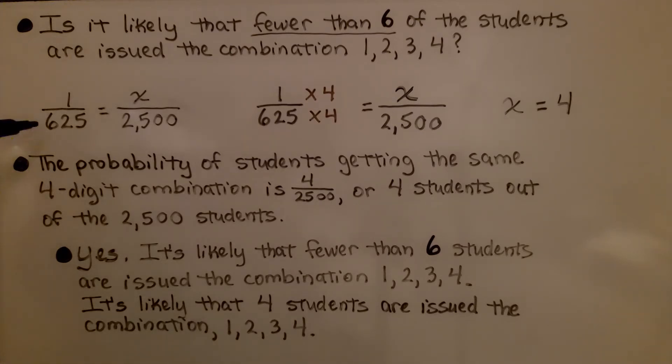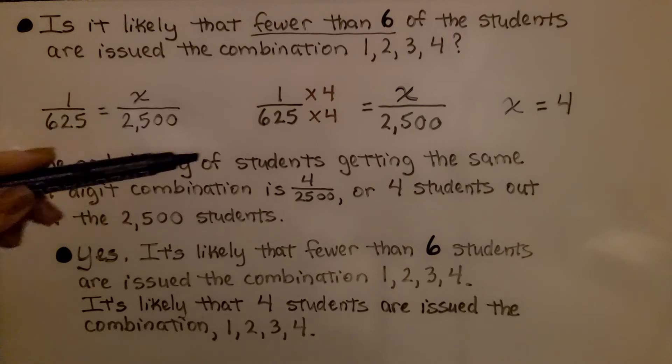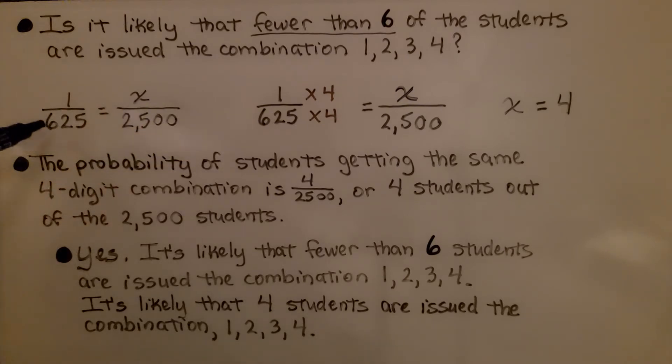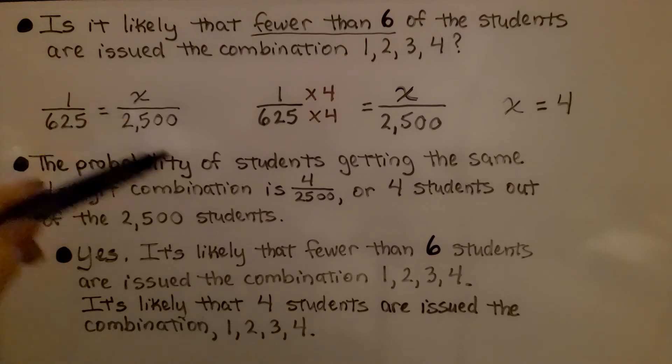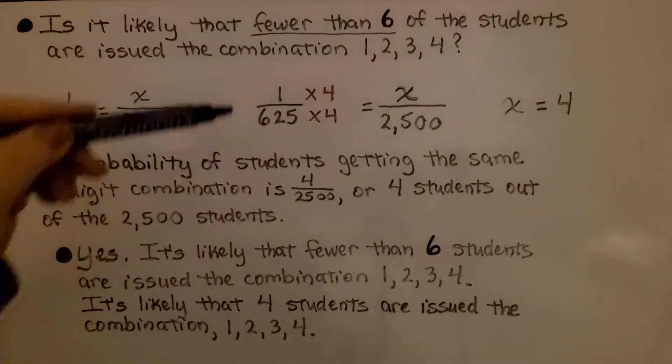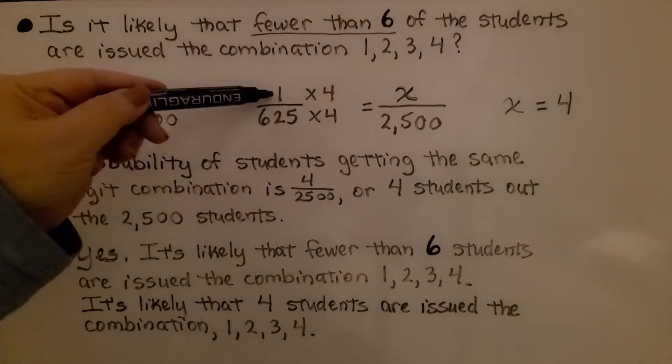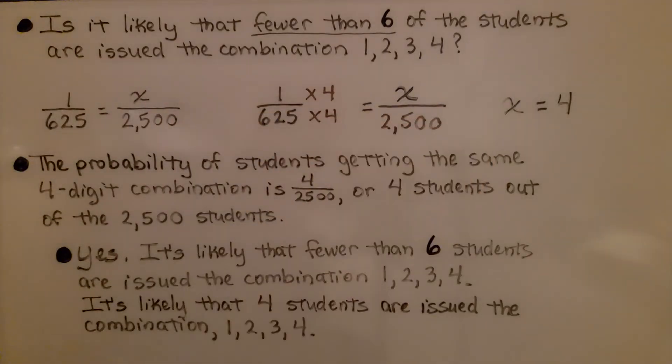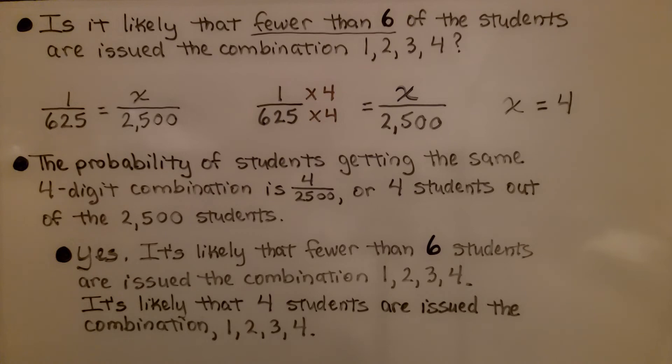We have one-six-hundred-twenty-fifths is equal to x over two-thousand-five-hundred students. What do we need to multiply six hundred-twenty-five by to equal two-thousand-five-hundred? We can multiply it by four. That means the numerator needs to be multiplied by four, which means x is equal to four. The probability of students getting the same four-digit combination is four twenty-five-hundredths, or four students out of the two-thousand-five-hundred students.